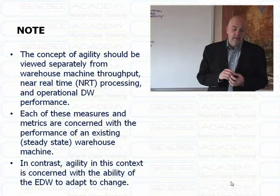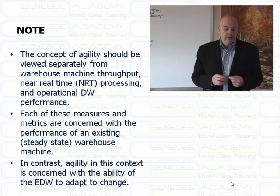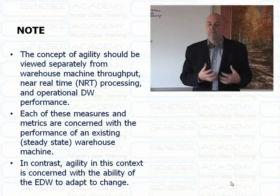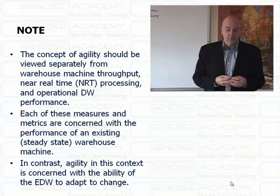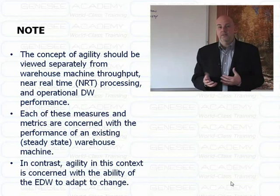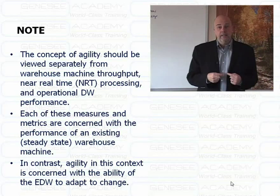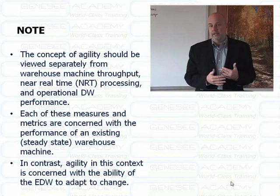Near real-time processing, how fast you get the information through to the actual user, and operational data warehousing performance are separate topics. Each of those type of measures are actually concerned with metrics that have to do with the performance of an existing warehouse, a steady-state warehouse — how fast does it actually perform pushing data through to the other side? In contrast, this discussion about agility is related to the idea of how does that EDW adapt to change that hits it. Not just the performance, but the adaptability to change is what we're looking for here.